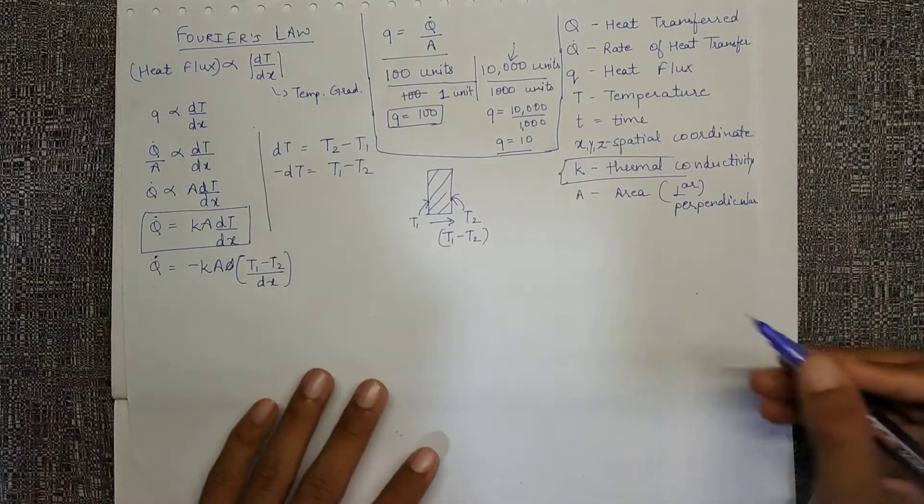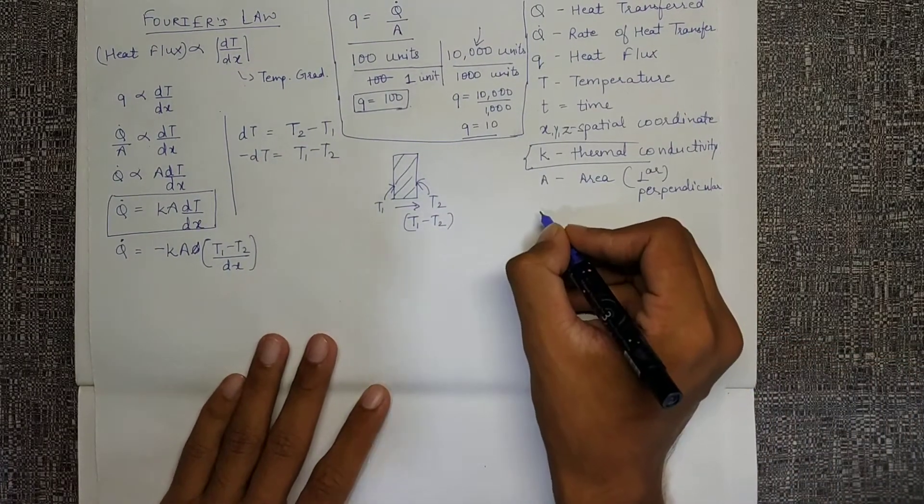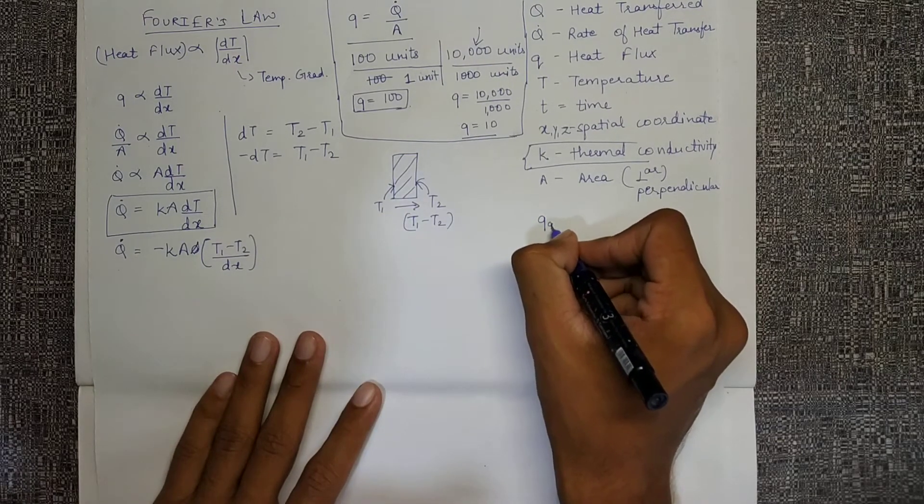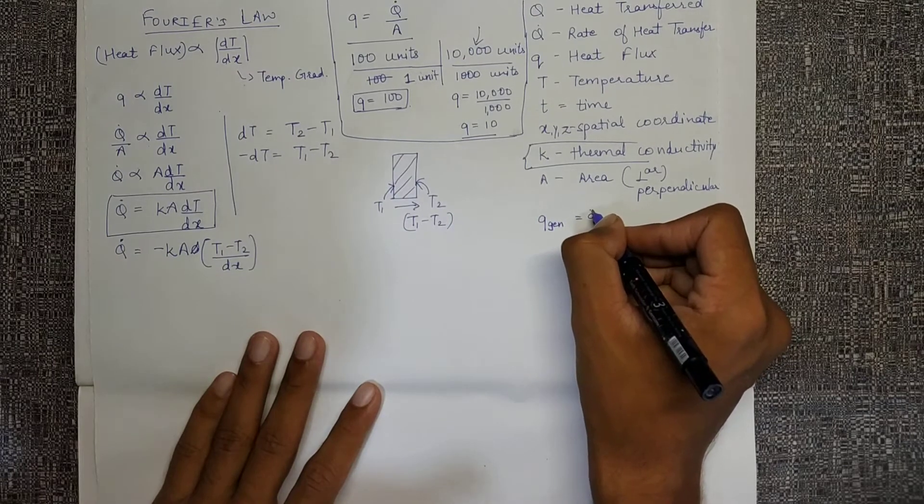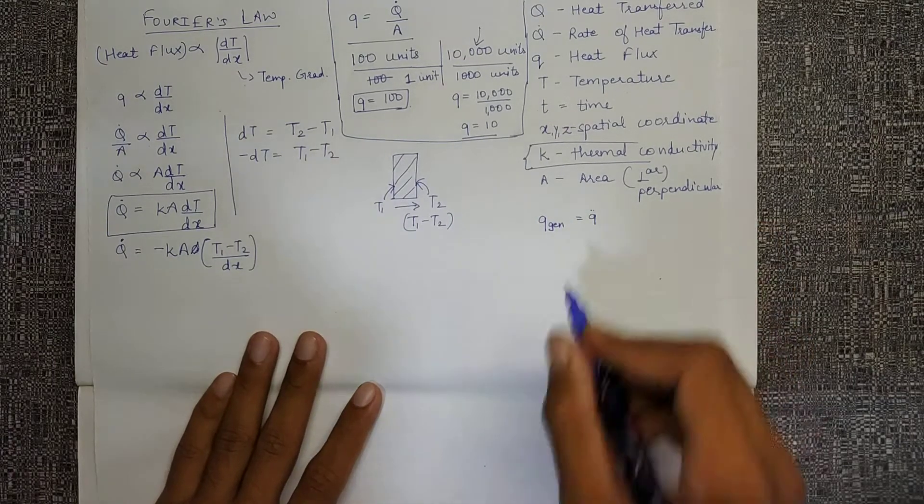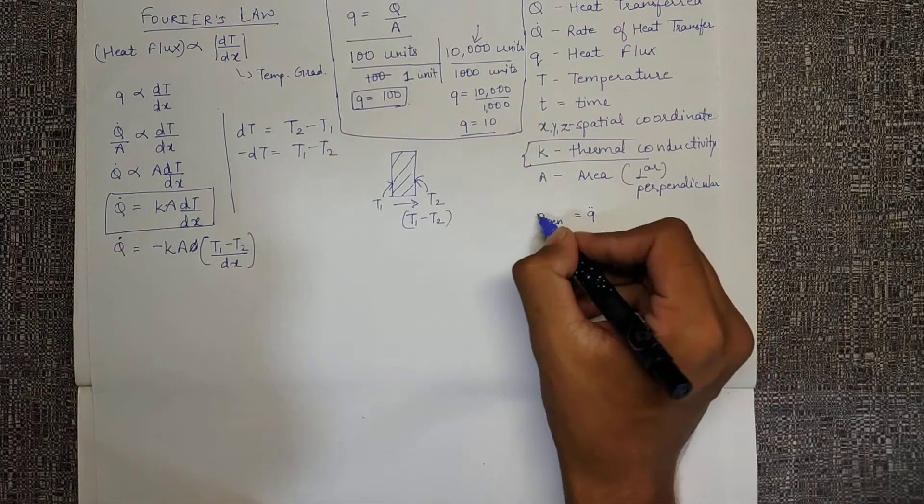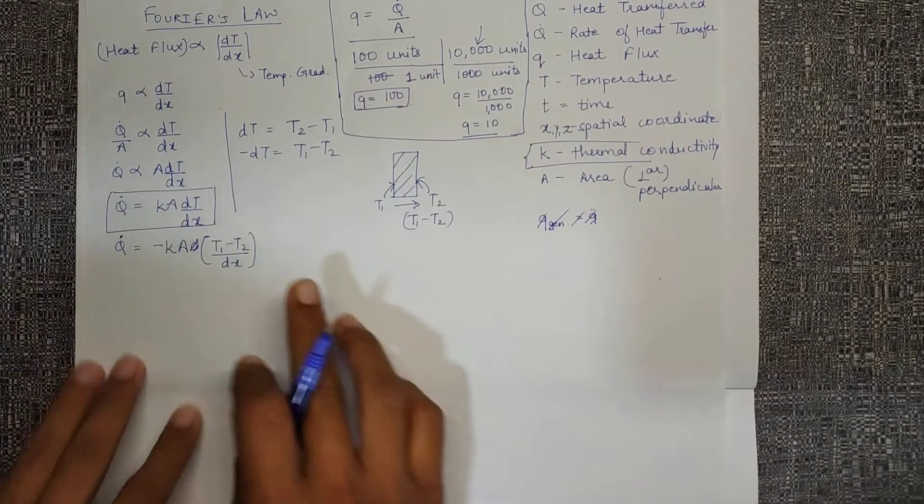So let me define some more things. This was the heat flux, and heat generation will be q gen or q double dot. I will come to that at some later stage, but just to give you a small introduction. It's not required right now. So that's all, this is Fourier's law.